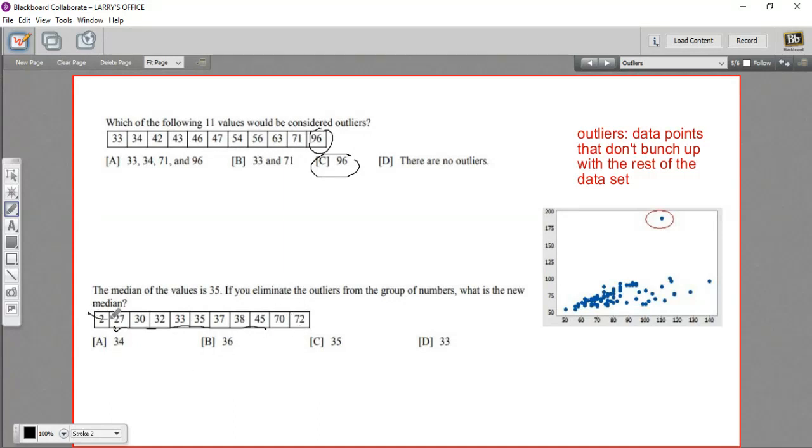So I think in this case, I would exclude the 2 and the 70 and the 72. The rest of these kind of bunch up together. Now, in the original data set, 35 was the median. It was in the middle. Let's see what it is now.